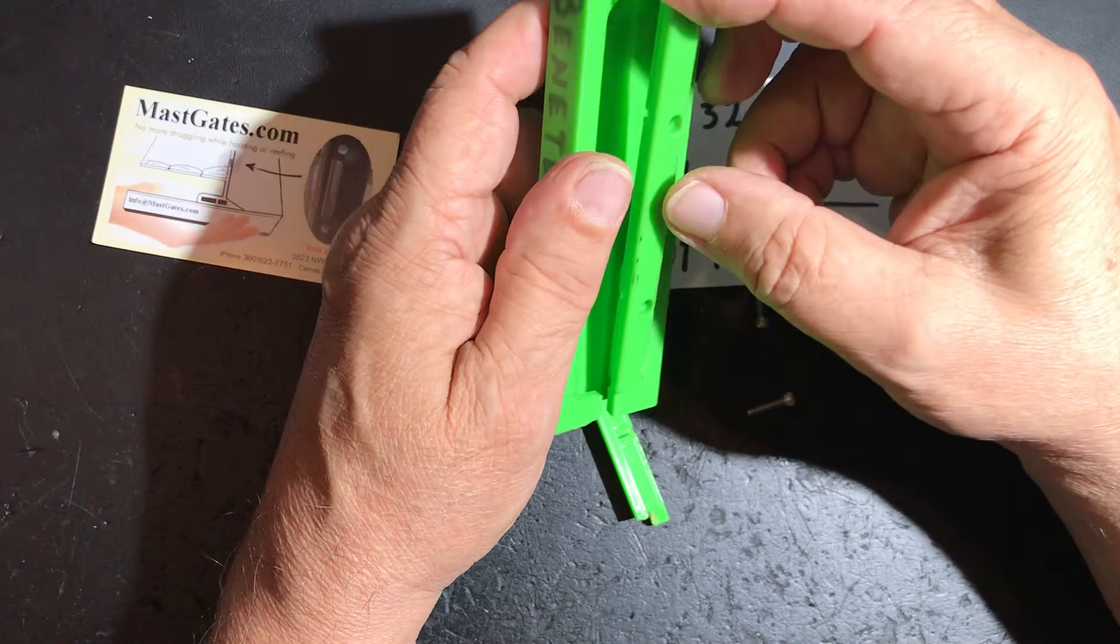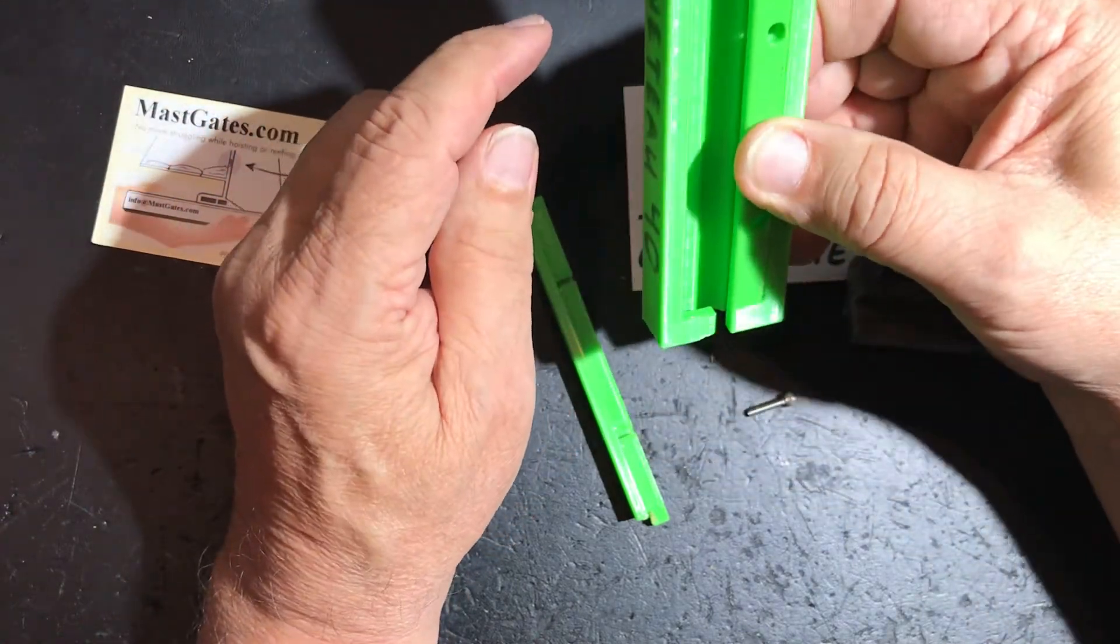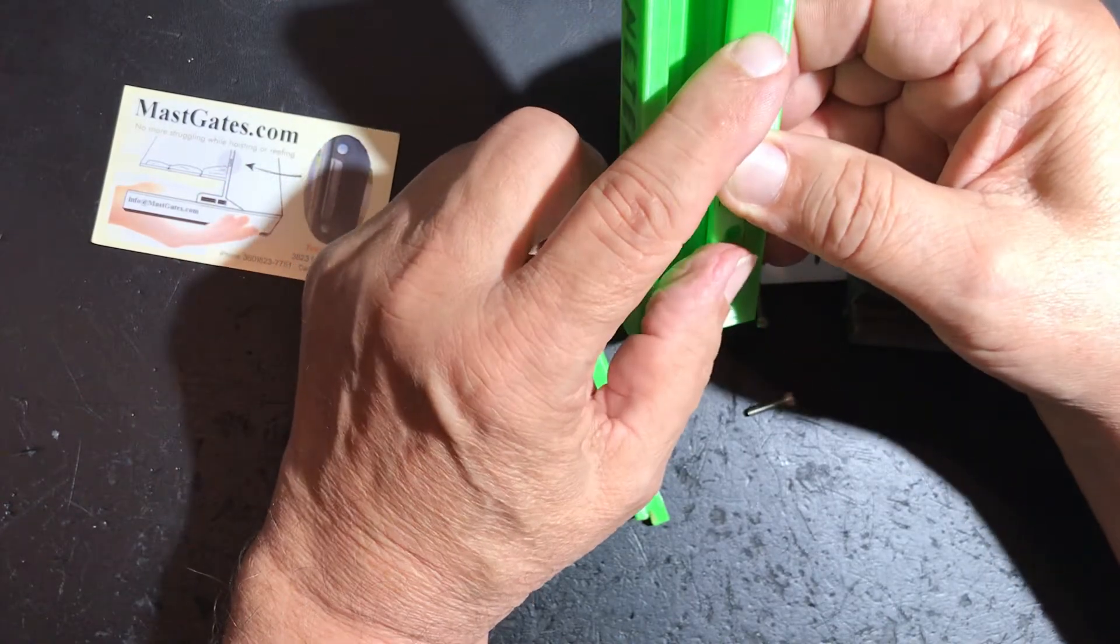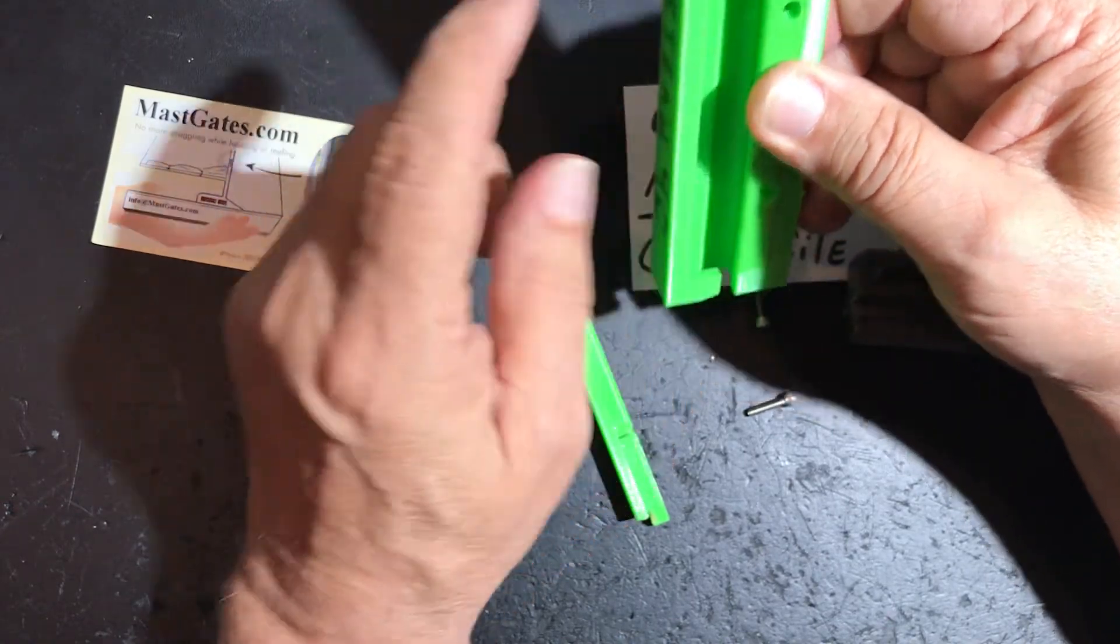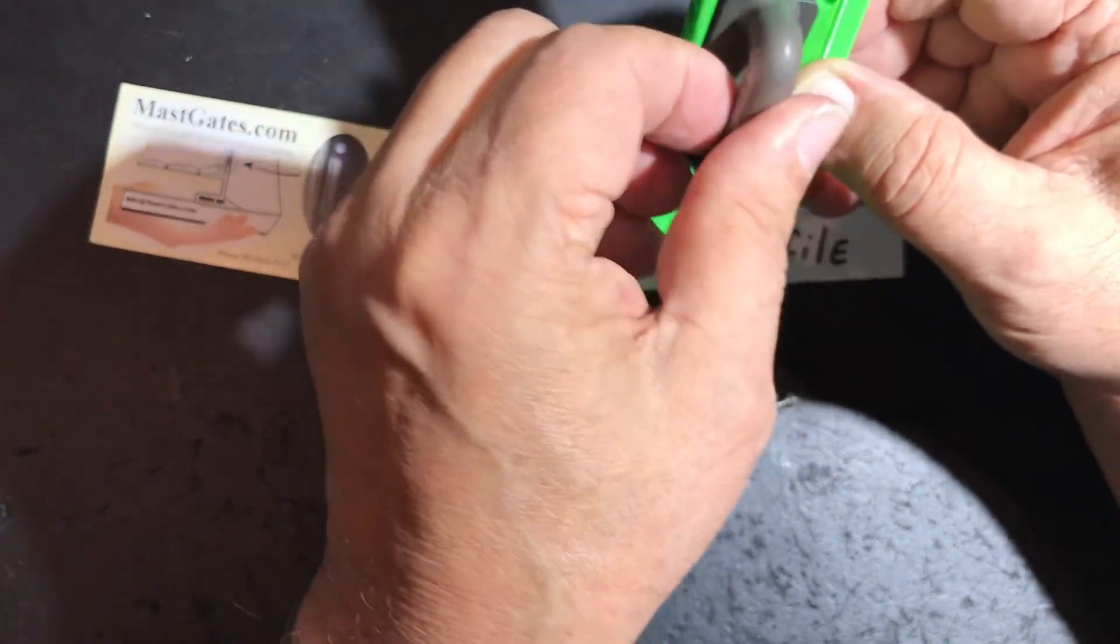Now once again, install and you only need one side that you're going to be taking off. One side can just stay permanently installed because you only need one side removed in order to take out your sail.